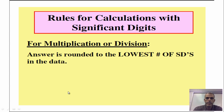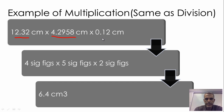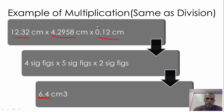For multiplication or division, the answer is rounded to the lowest number of significant digits in the data. For example, multiplying 12.32, 4.2958, and 0.012: the first has four significant digits, the second has five, and 0.012 has only two significant digits. So our answer is left with only two significant digits because that's the lowest. The same rules apply for division — always go with the lowest amount of significant digits.